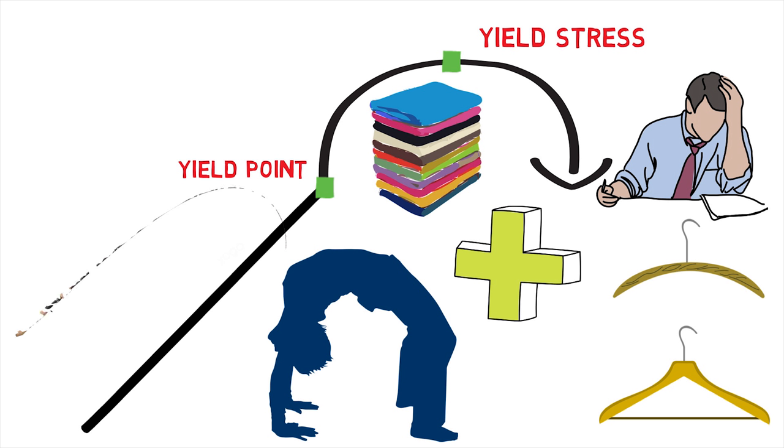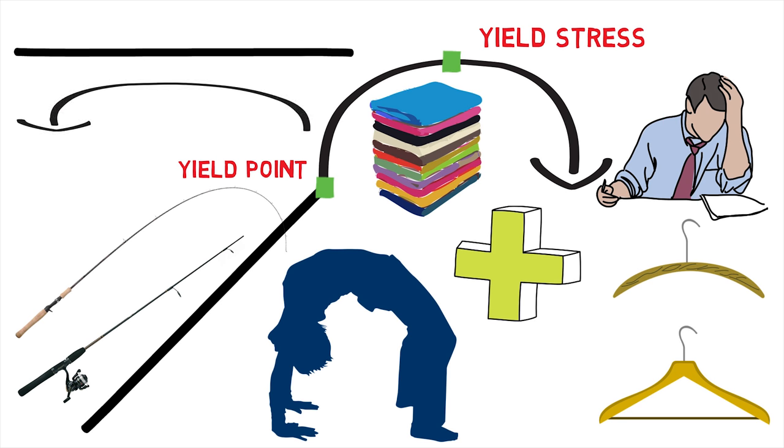Prior to the yield point, the material will deform elastically and will return to its original shape when the applied stress is removed. Once the yield point is passed, however, some fraction of the deformation will be permanent and non-reversible.